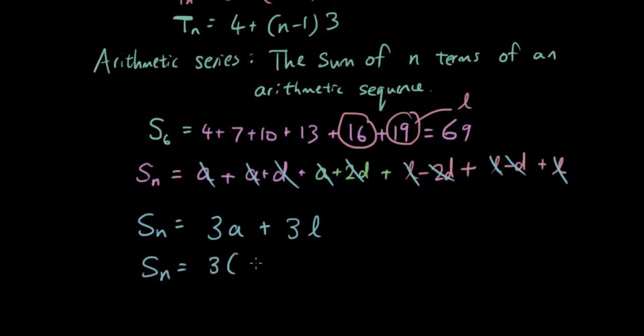Now what do we notice about the number 3 compared with the number 6? Initially we had S6. If you guys remember, this was actually S6. So if I want to get the number 3 from 6, what do I do? Well I halve it. So therefore, 3 actually comes from n divided by 2. And that is pretty much the formula for our arithmetic series.